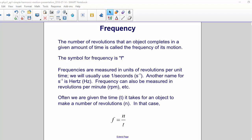Often, we are given the time it takes for an object to make a number of revolutions. In that case, frequency equals the number of revolutions divided by the time it takes.